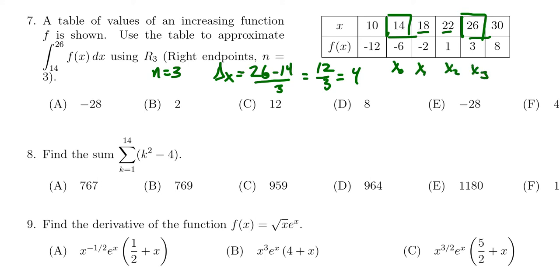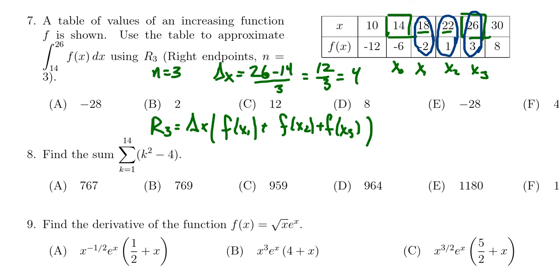If we're using the right endpoint rule to approximate this, we need to figure out what is happening at x1, at x2, and x3. Therefore, R3 is going to equal delta x times f(x1) plus f(x2) plus f(x3). That's what we get for R3.